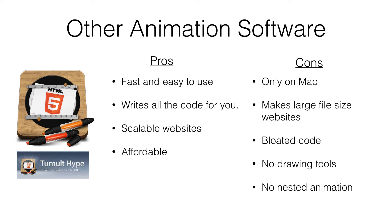Tumult Hype is a relatively new piece of software. It's fast and easy to use, writes the code for you, great for scalable websites, and you can type your own CSS into it. It's mainly for making websites with a bit of animation in them, and it's a lot more affordable than Flash — quite inexpensive, which makes it very popular with students. The cons: it's only available for Mac, it makes large file size websites — around 30 megabytes for a rich interactive site, which is no good on a 3G connection. My developer friends say it produces quite bloated code. It has no drawing tools and no nested animation at the moment, although I hear in version 3 they're bringing in nested animation.